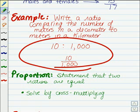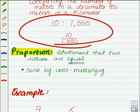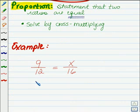Now we'll look at the second thing, and that is a proportion. Very closely related to a ratio, except it involves two ratios. It's a statement that says that two ratios are indeed equal. And you can solve a proportion by doing cross-multiplying. Let's take a look here at an example.